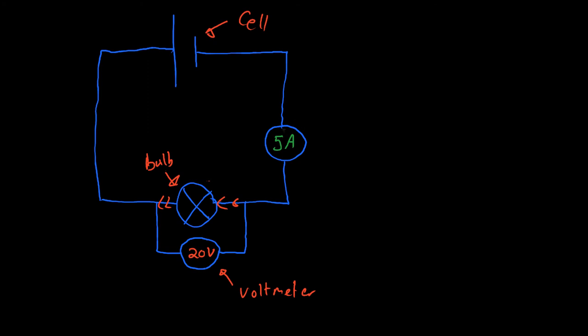So, we have a 5 amp current going through this entire circuit. This is a series circuit which means that that current is going to be constant throughout the whole thing. And the only component we have is the bulb, and that has a potential difference across it or a voltage of 20 volts. And so, what I want to work out is the resistance of the bulb.